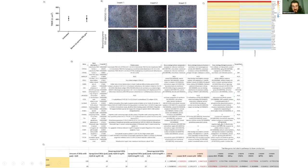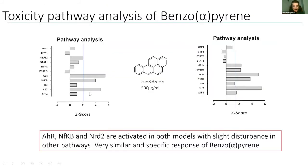Benzo[a]pyrene, on the other hand, was very similar in both models — very similar responses. No effect on the TEER and the barriers. In both models, CYP1A1 was the most affected gene with the highest upregulation, further showing that some CYPs not expressed at baseline are induced when treated with drugs. Here we also see very similar responses with AHR and NF-κB activation and NRF2 — a very similar and specific response to benzo[a]pyrene at 500 micrograms per mL.